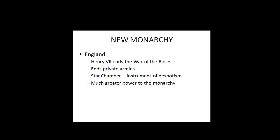When we look at the rise of the new monarchies in Europe, England in particular stands out. By the time of the end of the War of the Roses, Henry VII, who ends the war, basically sets himself up as a very powerful monarch. He ends the private armies and introduces the Star Chamber, which was his own private tribunal or court, and it becomes a very strong instrument of despotism in England.